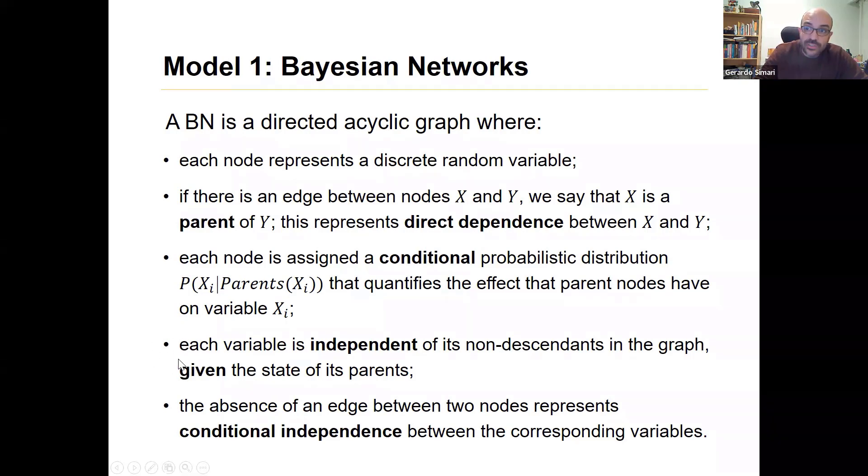This is the nice computational aspect about this: each variable is independent of its nondescendants in the graph given the state of the parent. So if you know what the parent's values are, then you have probabilistic independence, and you can do tractable computations, answer queries, that kind of thing. And the absence of an edge between two nodes represents conditional independence.